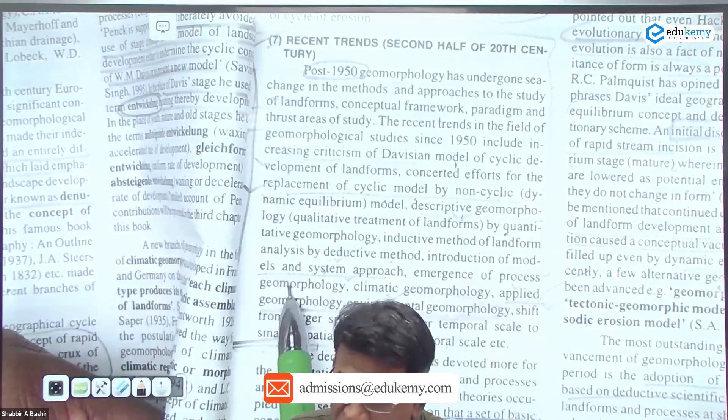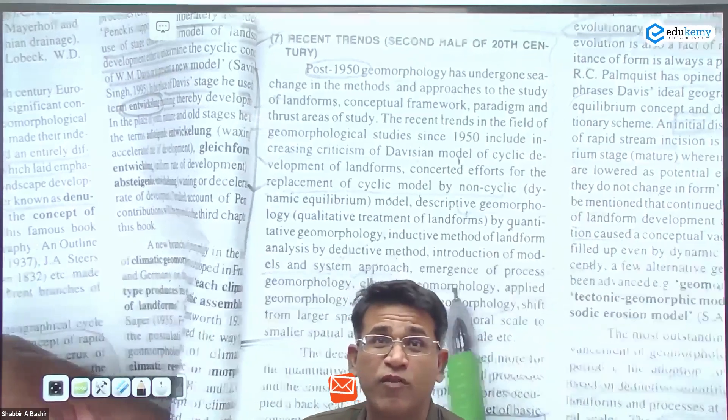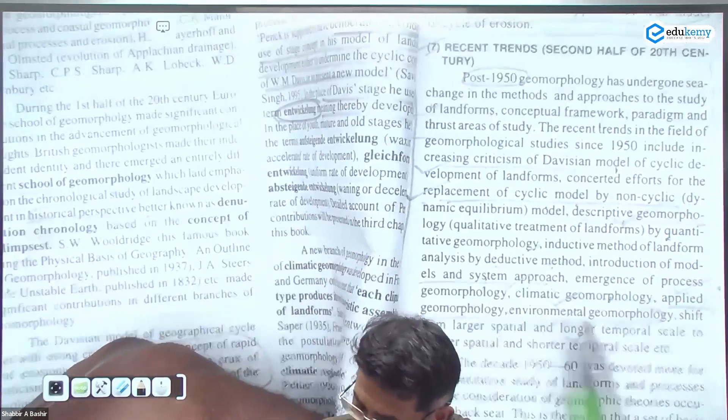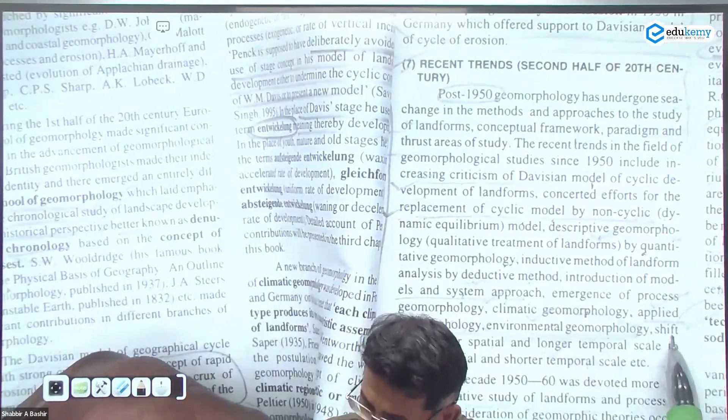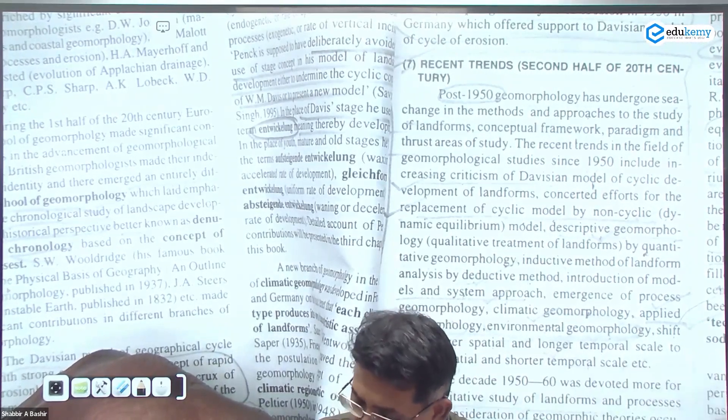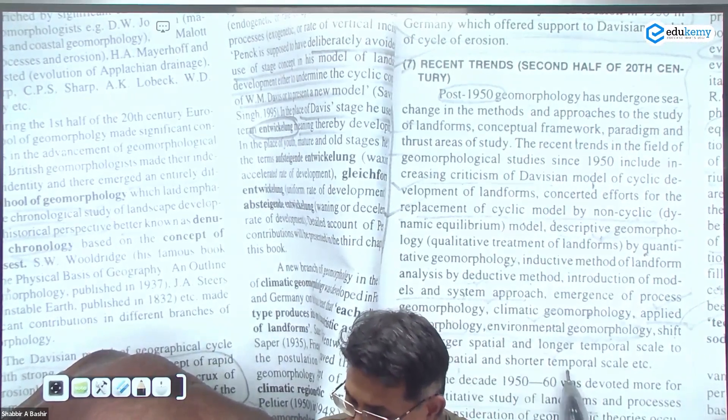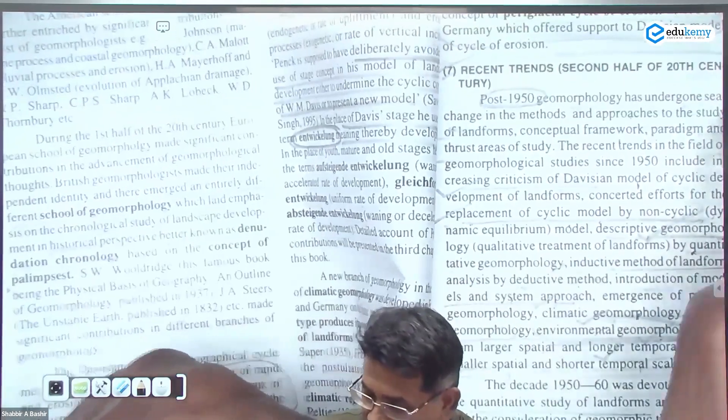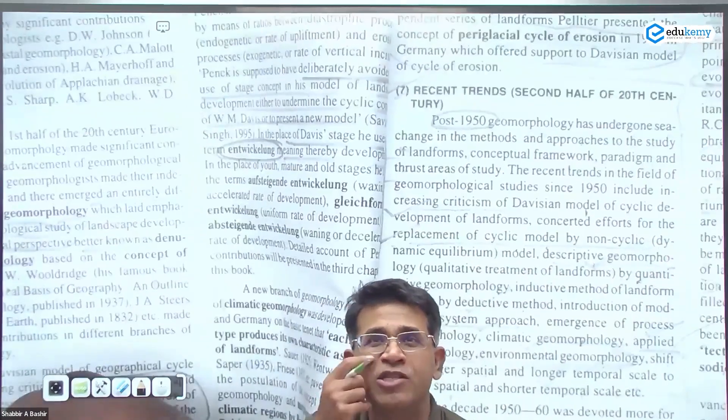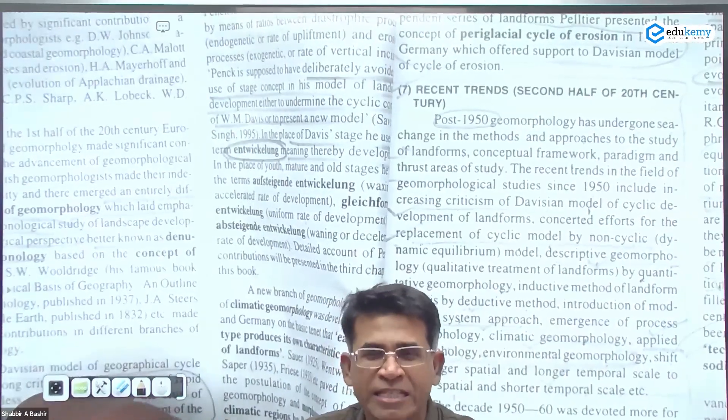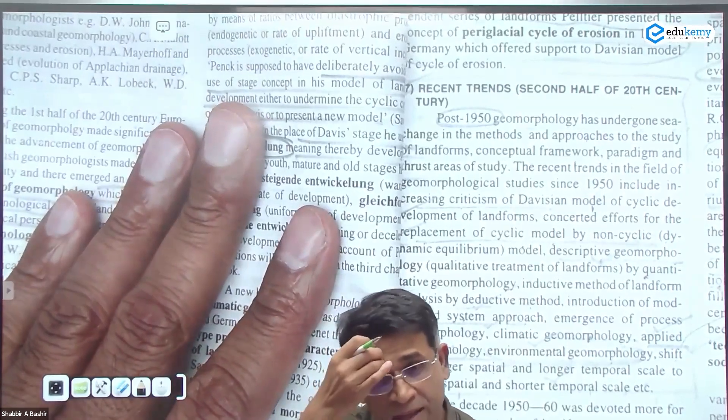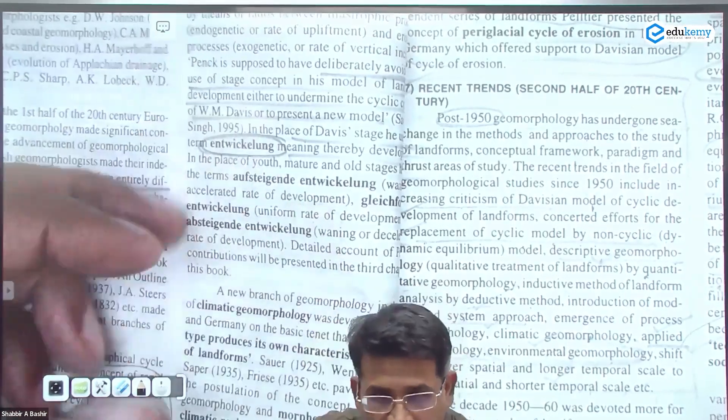Replacement by dynamic models and the descriptive geomorphology by quantitative geomorphology. Now we use more inductive methods of landform analysis and replace that by deductive methods. We introduced models and systems, emergence of process geomorphology, climatic geomorphology. There is more applied geomorphology, environmental geomorphology, and shift from larger spatial and longer temporal scale to smaller spatial and shorter temporal scales. Almost like summarizing how geomorphology over the years has changed and developed. Earlier descriptive, now analytical. Now it is more applied, now it's more about environment issues.